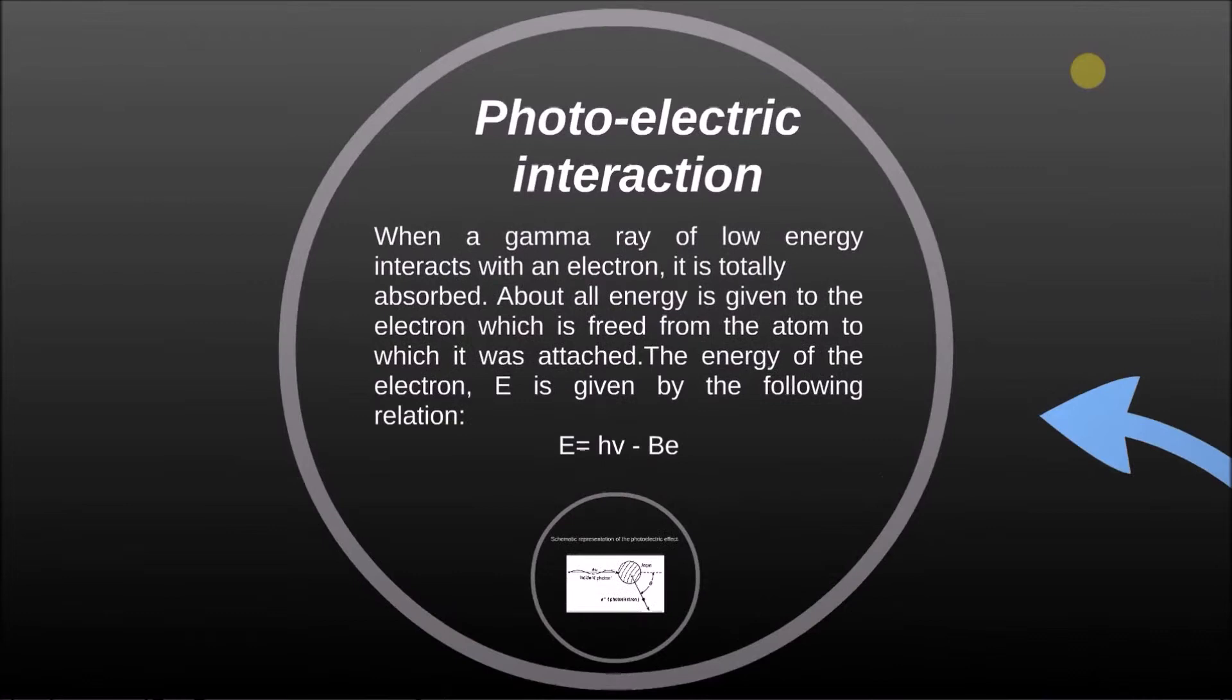Photoelectric interaction: When a gamma ray of low energy interacts with an electron, it is totally absorbed. About all energy is given to the electron, which is freed from the atom to which it was attached.